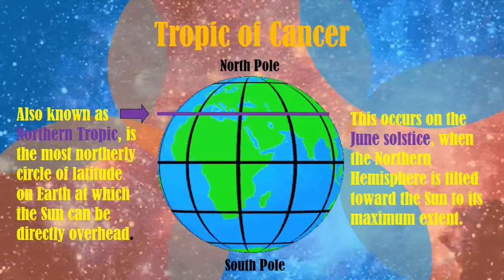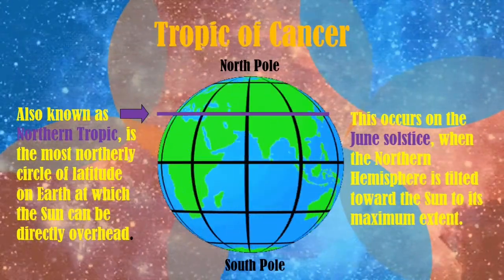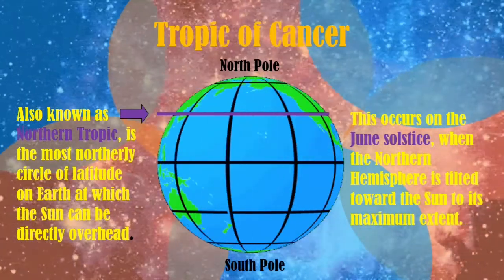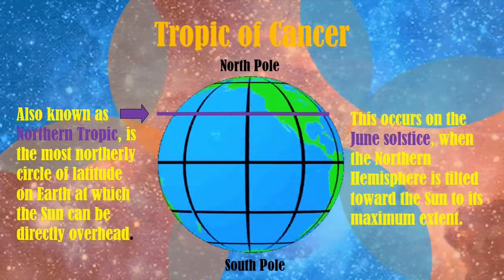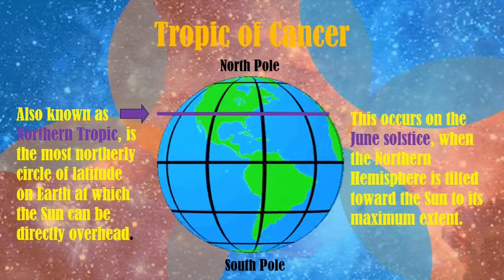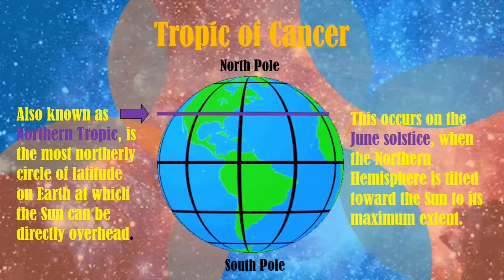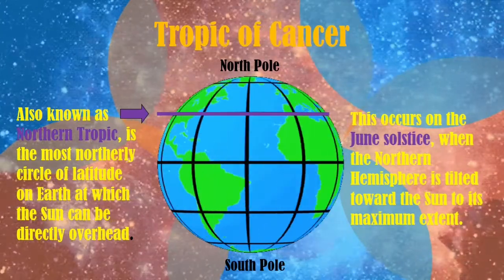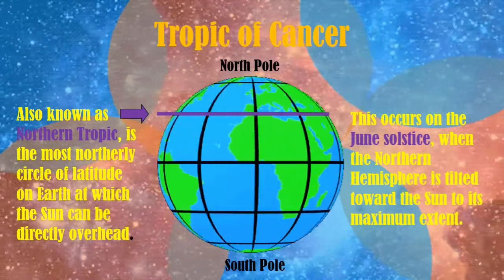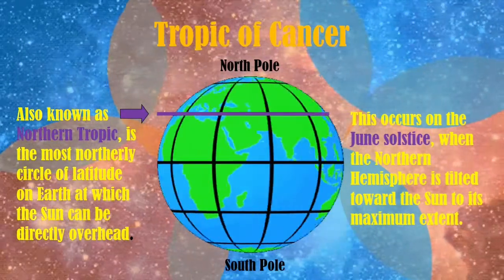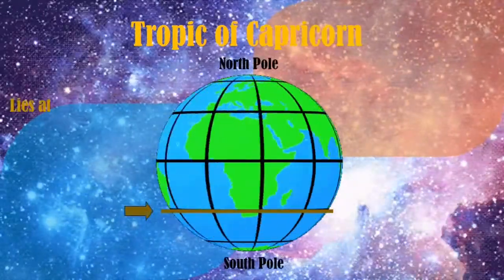Winter solstice, sometimes called midwinter, occurs when one of the earth's poles has its maximum tilt away from the sun, and this happens twice a year, once in each hemisphere. Summer solstice, sometimes called midsummer, occurs when one of the earth's poles has its maximum tilt toward the sun, and this also happens twice yearly, once in each hemisphere. Now let's have the Tropic of Capricorn.